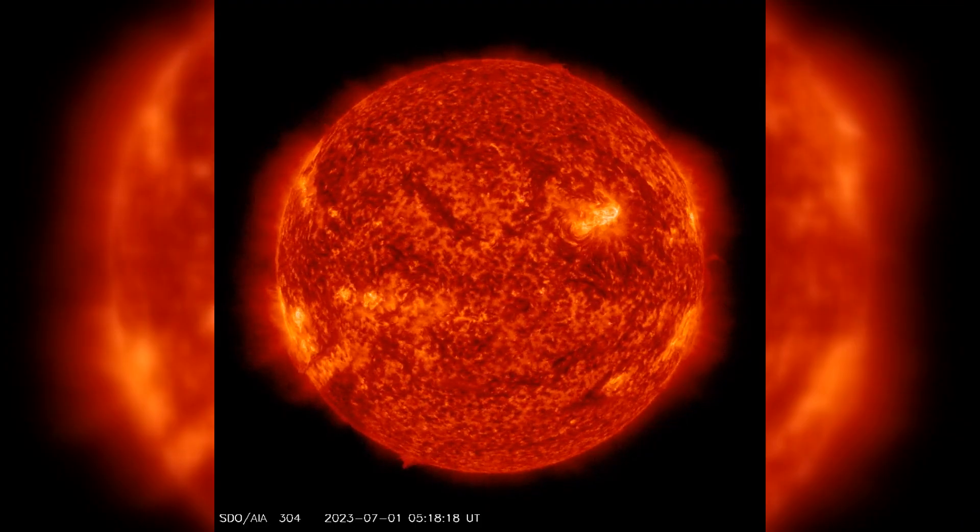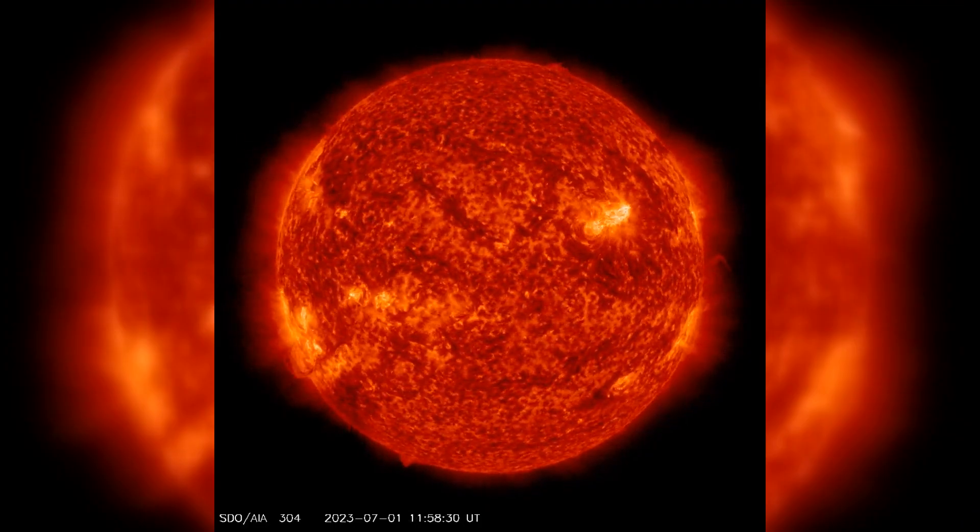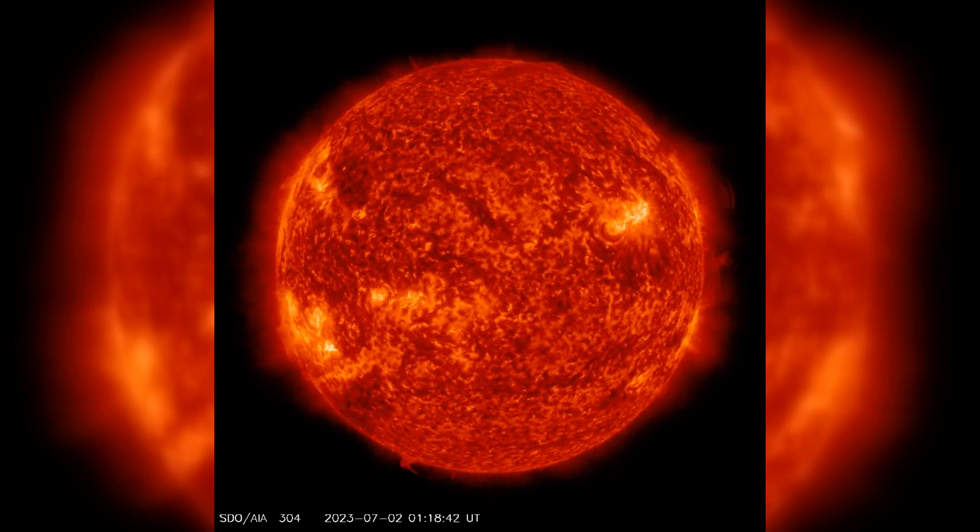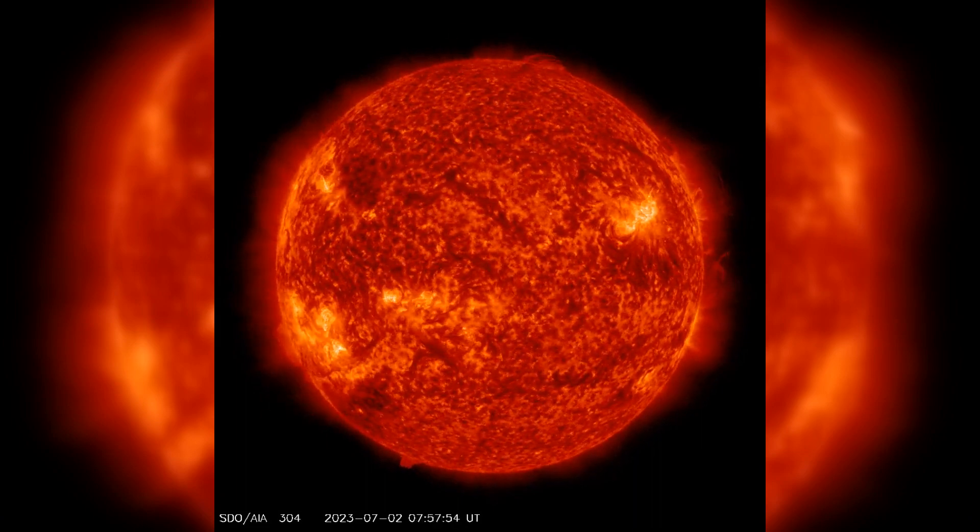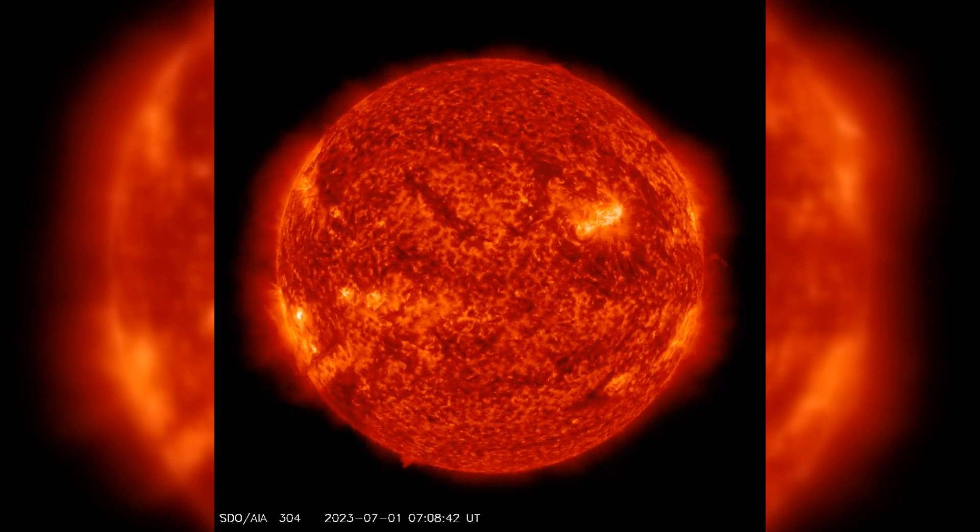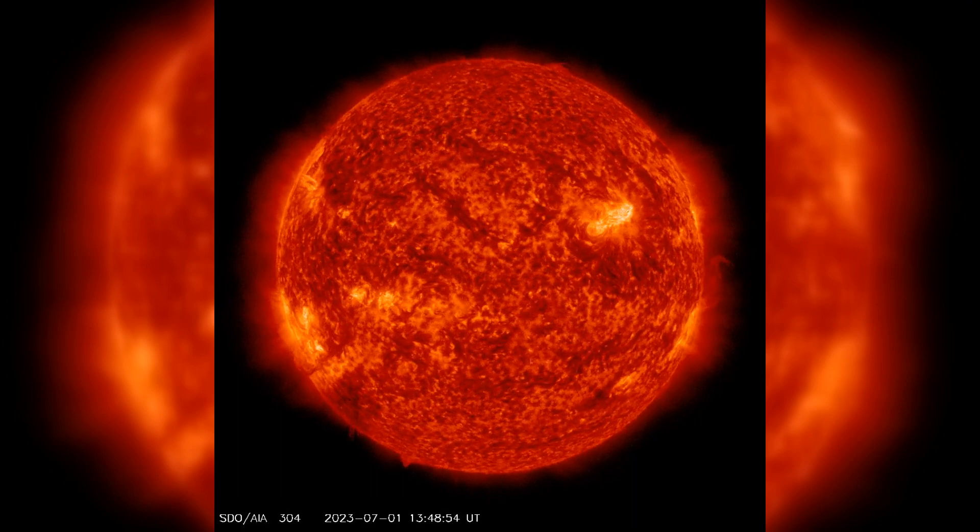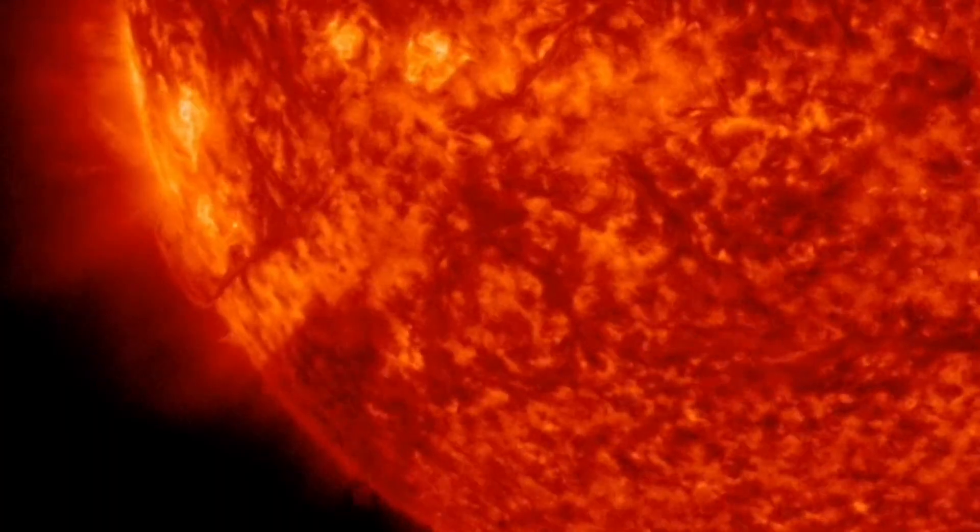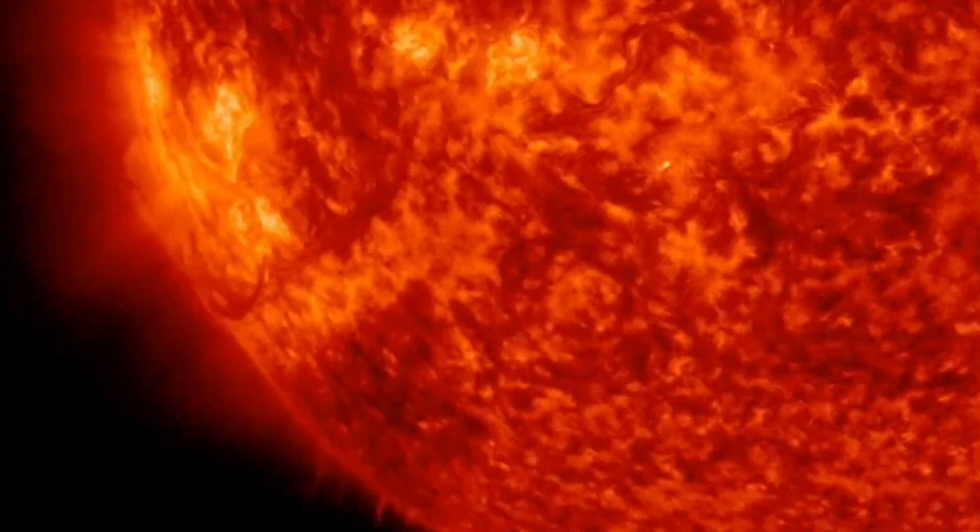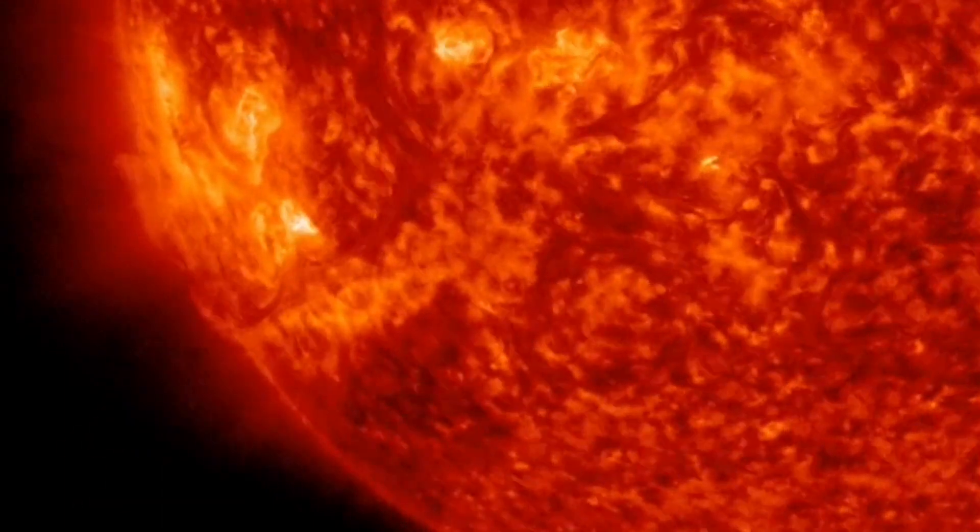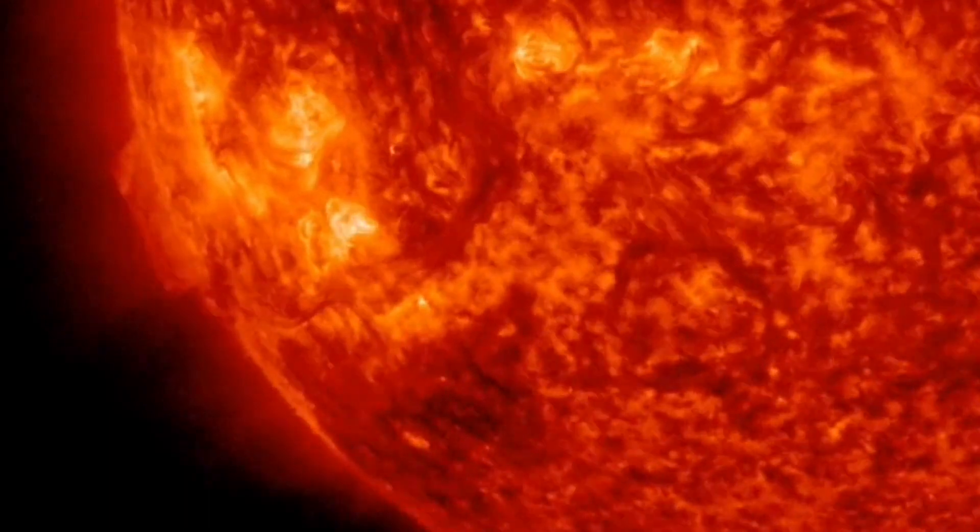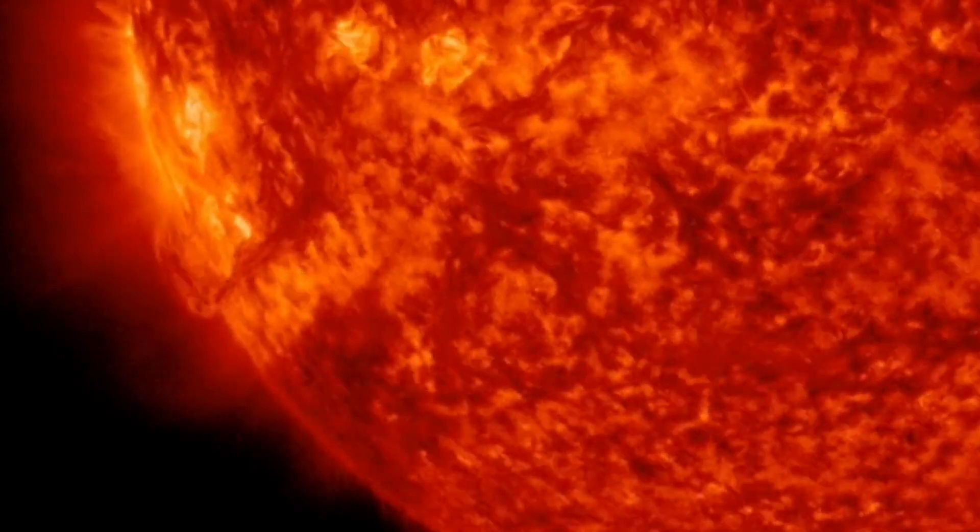Solar activity has been moderate in recent hours, with notable occurrences of M-class flares originating from Region 3359, specifically from the area designated as S22E46 with a Dai/beta classification. Two M-class flares were observed during this period, including an M1.6 flare at 012223 UTC and an M2 flare at 020235 UTC.